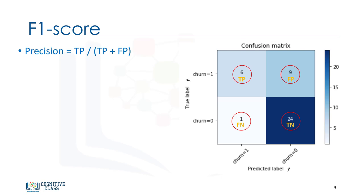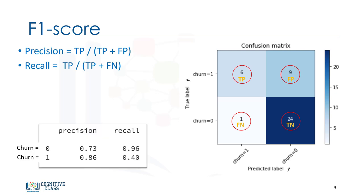Precision is a measure of the accuracy, provided that a class label has been predicted. It is defined by precision equals true positive divided by true positive plus false positive, and recall is the true positive rate. It is defined as recall equals true positive divided by true positive plus false negative. So, we can calculate the precision and recall of each class.